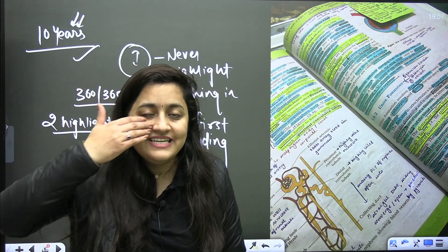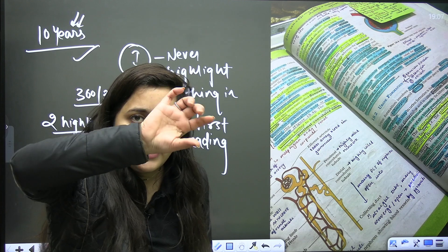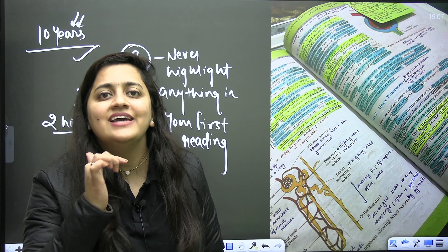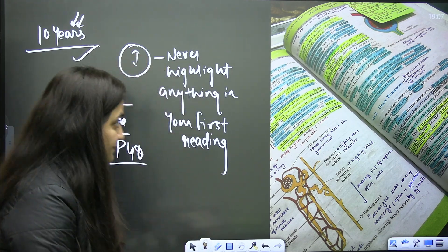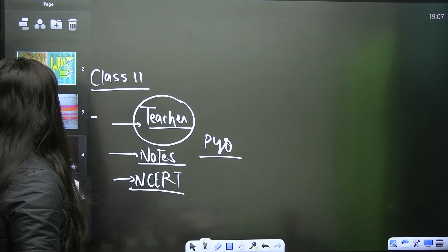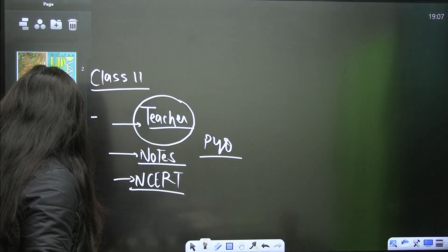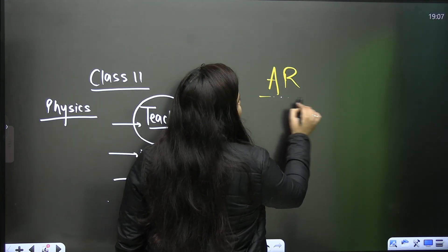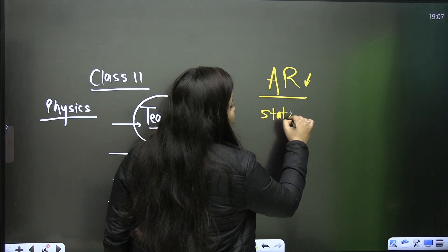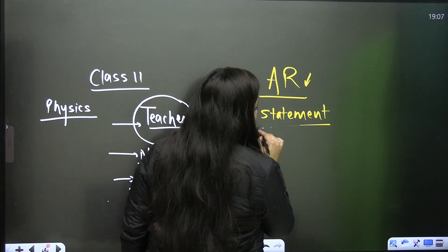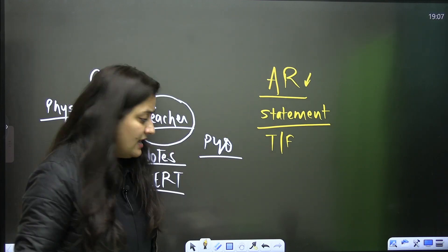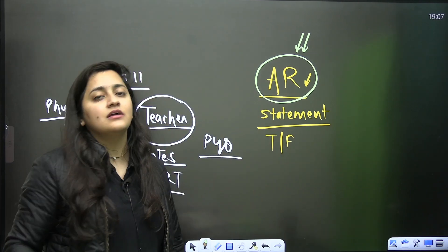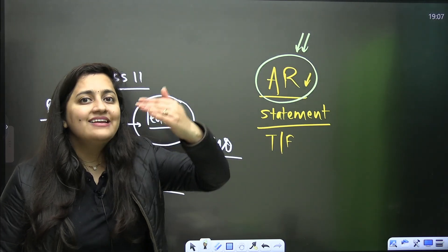So whenever you see that chapter next time, you know this was the portion where you were making mistakes and you should revise it properly. For biology, I don't suggest a separate error notebook — directly do it on the NCERT. Now, checking previous year papers, you know that biology assertion-reason kind of questions are coming, statement-based questions are coming, true-false kind of questions are coming, and students mostly make mistakes in assertion-reason questions.